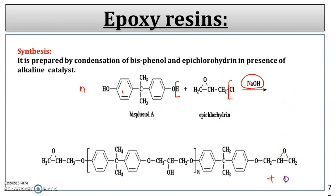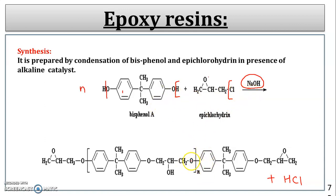During the reaction, the hydrogen from the hydroxyl group and the chlorine from epichlorohydrin are removed as HCl. The epoxide ring opens and a continuous chain forms: -CH₂-CHOH-CH₂-O- linking bisphenol rings. The byproduct removed is hydrochloric acid (HCl).